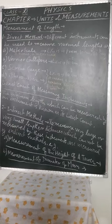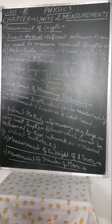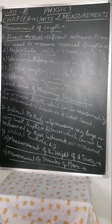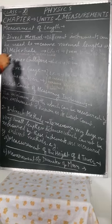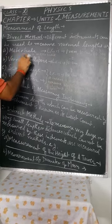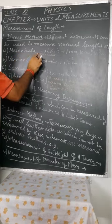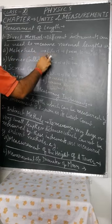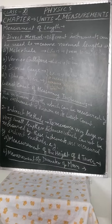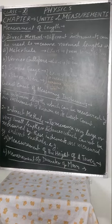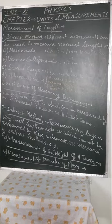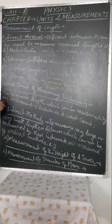Now we will talk about measurement of length. In the measurement of length, any small or big, small or large, we must have two kinds of methods. Number one, direct method. And number two is indirect method.